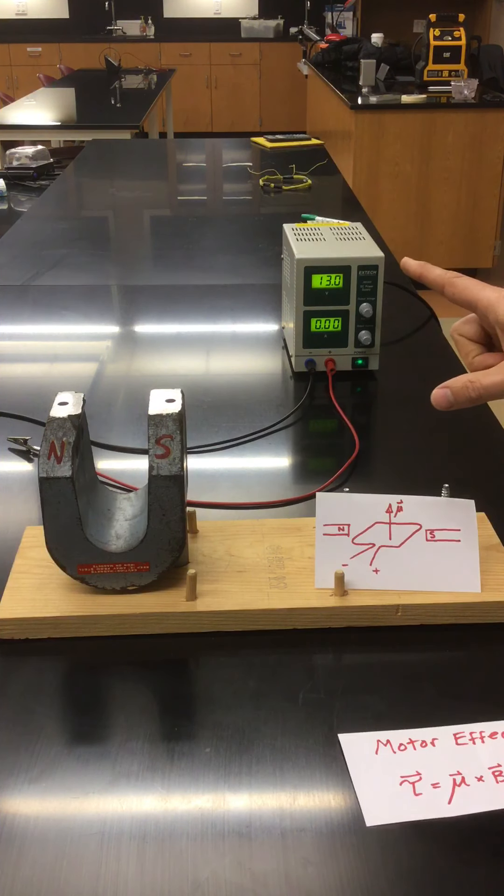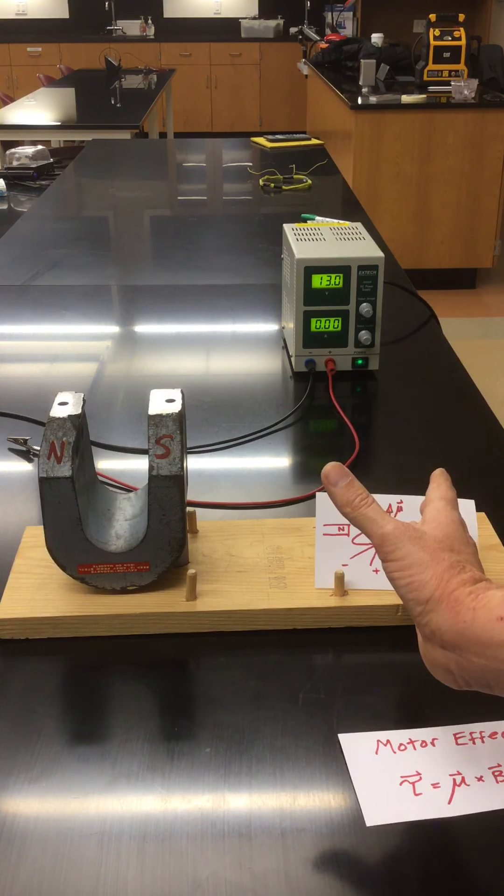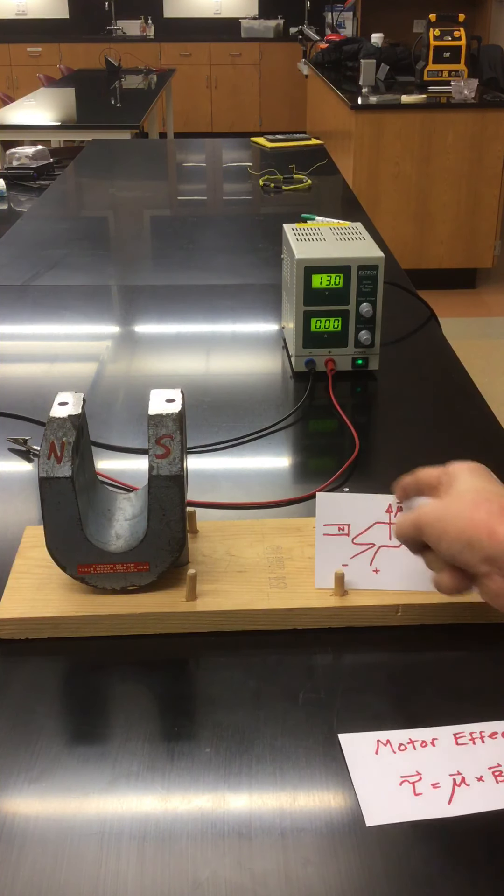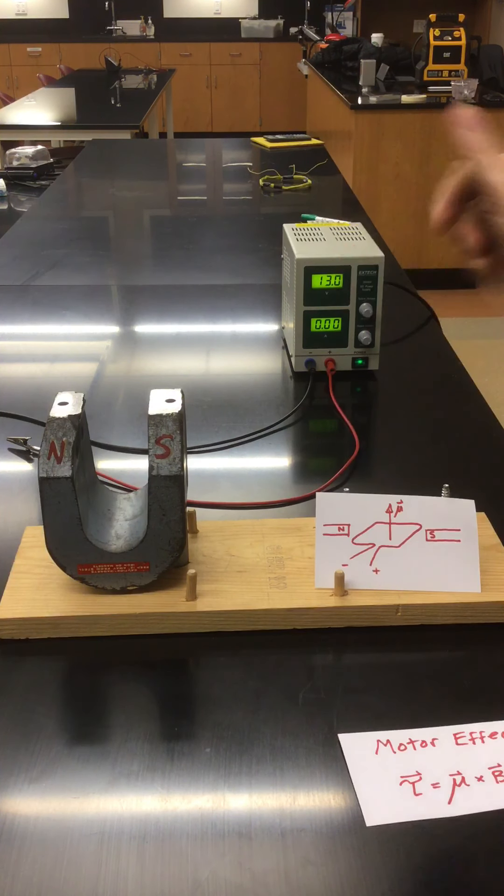By the way, you notice if we use another form of right-hand rule, if we put our fingers in the direction of the magnetic dipole moment and in that right, if the current is flowing this way, the magnetic dipole moment would point up. So think about that.